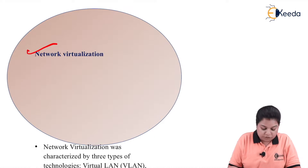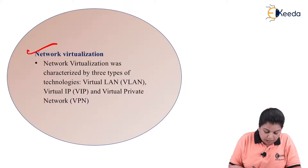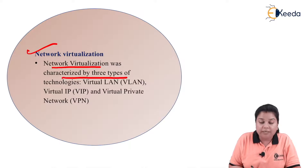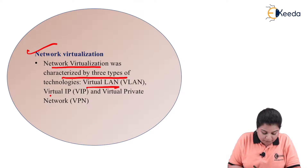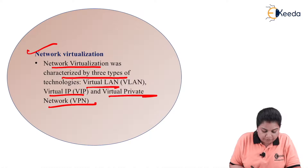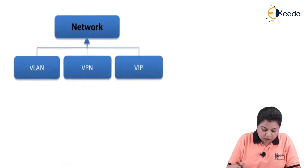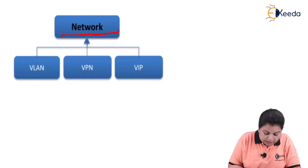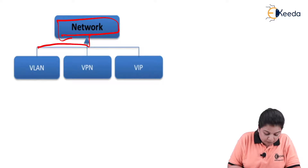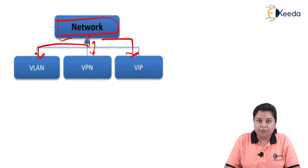Network virtualization was characterized by three types of technologies: virtual LAN (VLAN), virtual IP (VIP), and virtual private network (VPN). This domain is subdivided further into these three types.